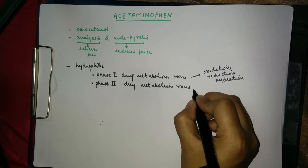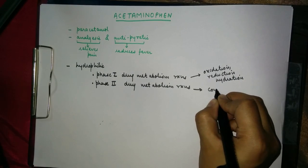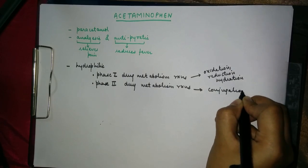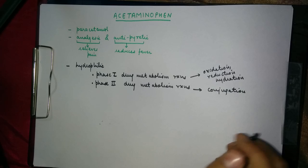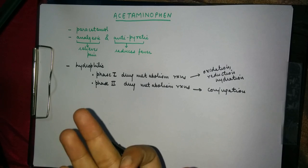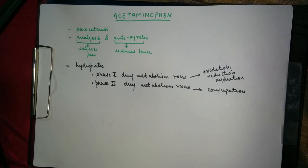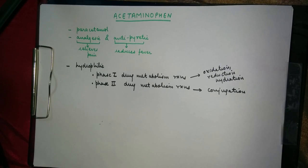The phase 2 reactions further lead to conjugation reactions. What basically happens in phase 2 drug metabolism is that conjugation of the drug takes place so that it becomes more hydrophilic and ultimately gets eliminated from the body.